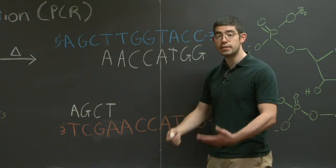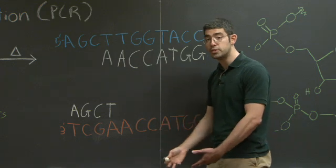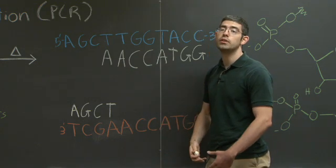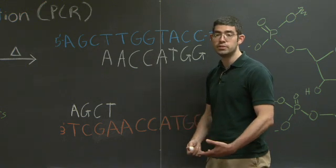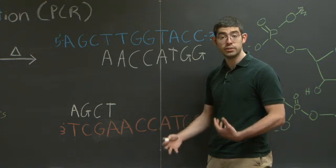As you can see, by repeating the steps, heating it, allowing it to cool, allowing more primers to bind, and then allowing the DNA polymerase to elongate, we can double the number of sequences every round. And you can rapidly get a large amount of the desired sequence.